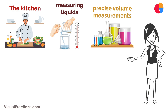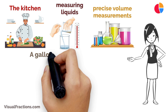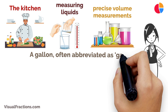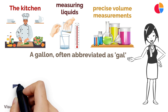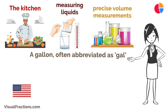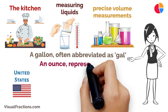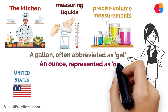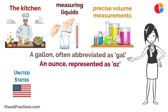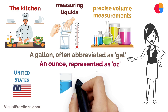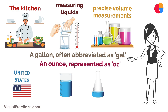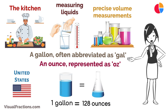Let's start with the basics. A gallon, often abbreviated as gal, is a unit of volume commonly used in the United States and a few other countries. An ounce, represented as oz, is a smaller unit of volume. Here's the key part: one gallon is equal to approximately 128 ounces.